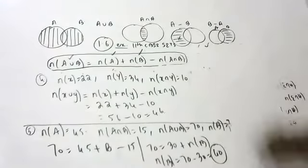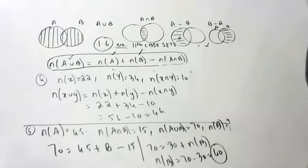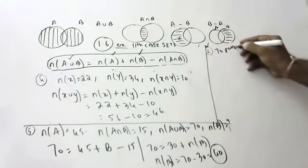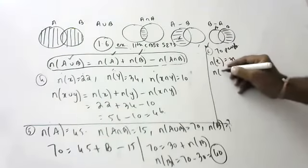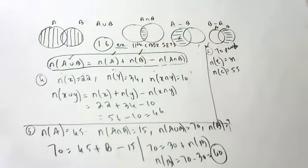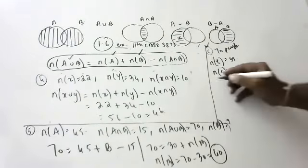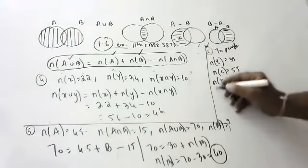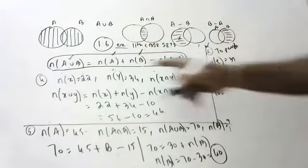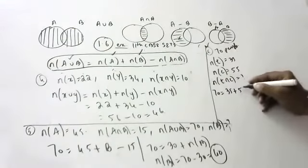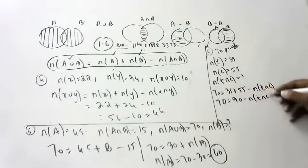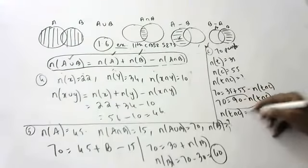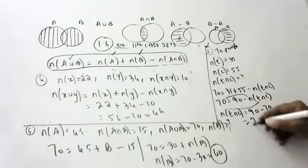Sixth question: In a locality, there are 70 people. The number who like tea is 35, who like coffee is 55, and each person likes at least one of the two. How many like both tea and coffee? N(T∪C) is 70, N(T) is 35, N(C) is 55. So 70 equals 90 minus N(T∩C), giving N(T∩C) equals 90 minus 70 equals 20. So 20 people like both tea and coffee.